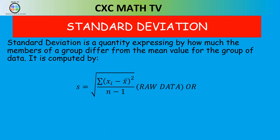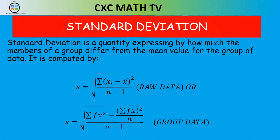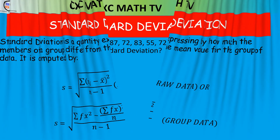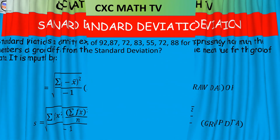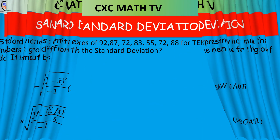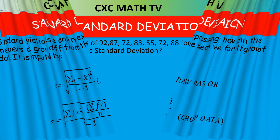Let's calculate the standard deviation for Matthew's scores — raw data — using the first formula. We create a table. The column xᵢ lists Matthew's scores: 92, 87, 72, 83, and so on. The mean was already calculated as 78.4.